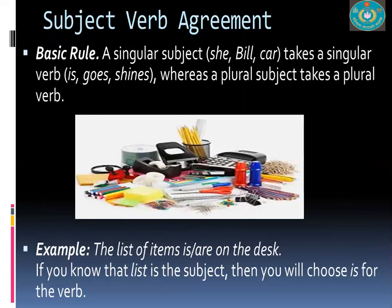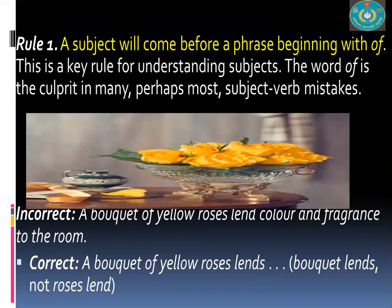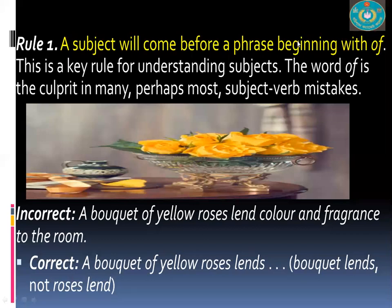Rule One: A subject will come before a phrase beginning with 'of' — a prepositional phrase. Remember, the word 'of' is the culprit in many subject-verb mistakes. Incorrect: 'A bouquet of yellow roses lend color and fragrance to the room.' Correct: 'A bouquet of yellow roses lends color and fragrance to the room' — not 'lend', because the subject is 'a bouquet', which is singular.